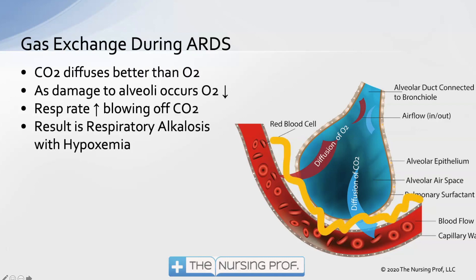Gas exchange during ARDS — again, CO2 diffuses better than oxygen. In the early stages we're starting to get some fluid accumulation and damage occurring to this alveolar capillary membrane, as illustrated by that yellow-orange squiggly line. That's exactly where we're having the diffusion of gases, so we're going to start to have some difficulty with that diffusion.